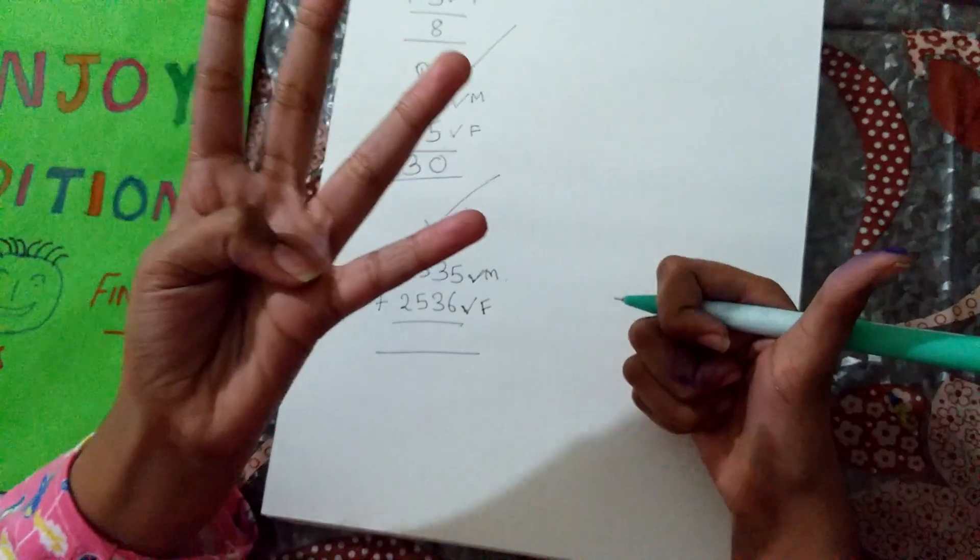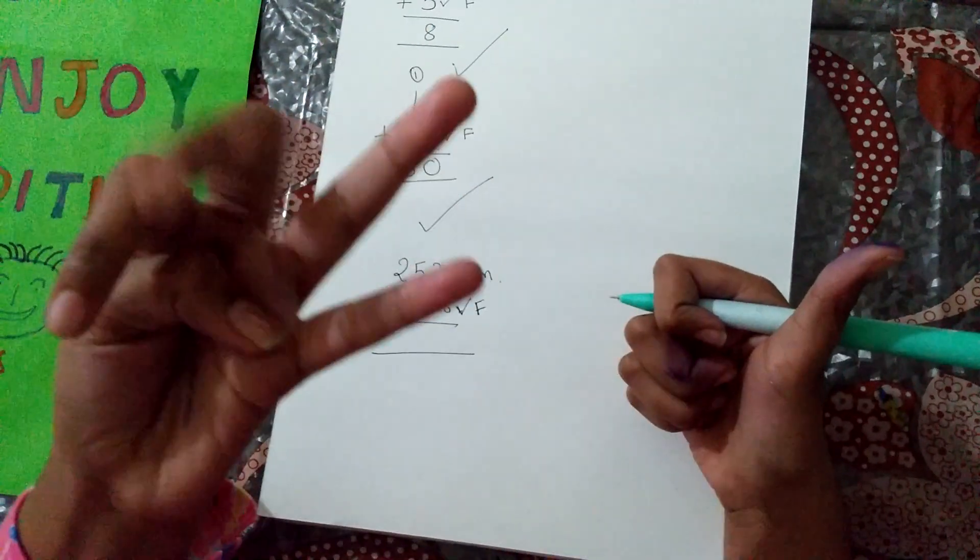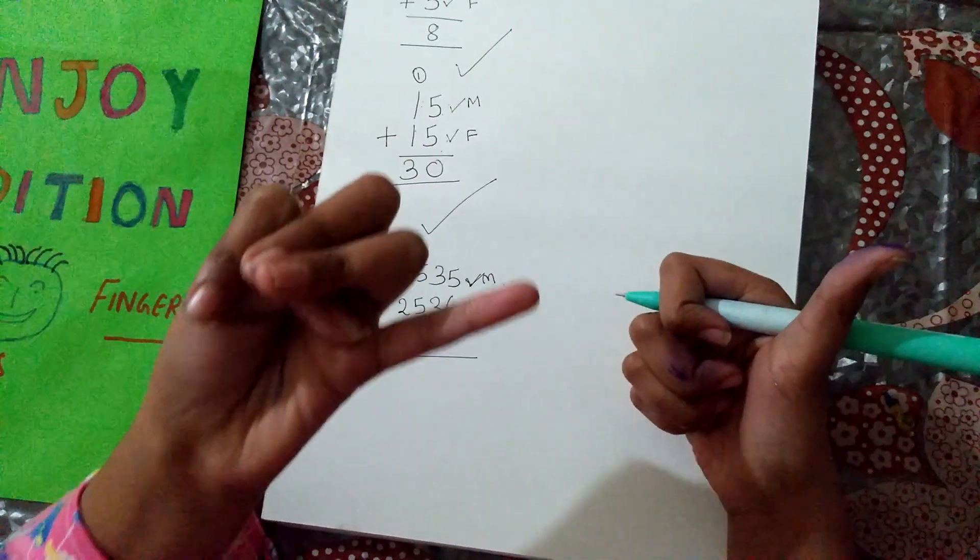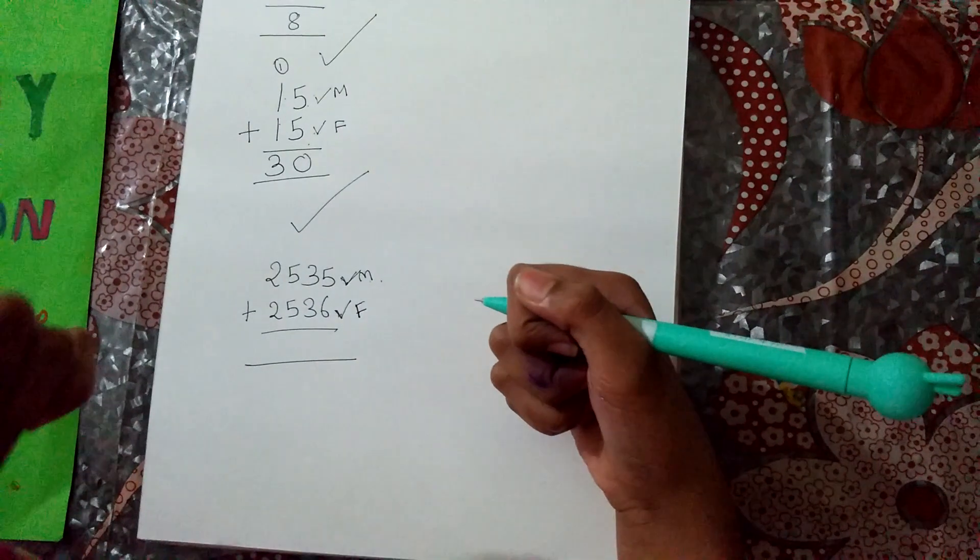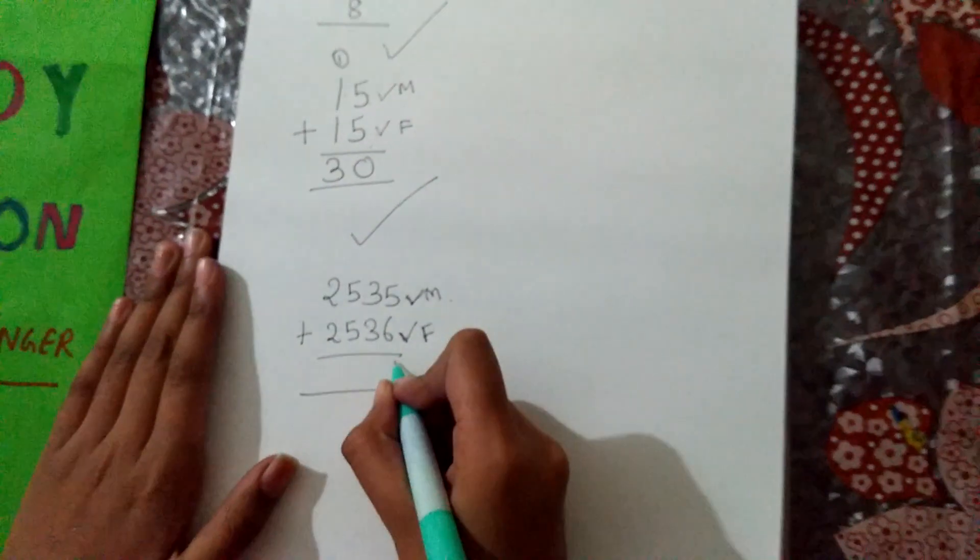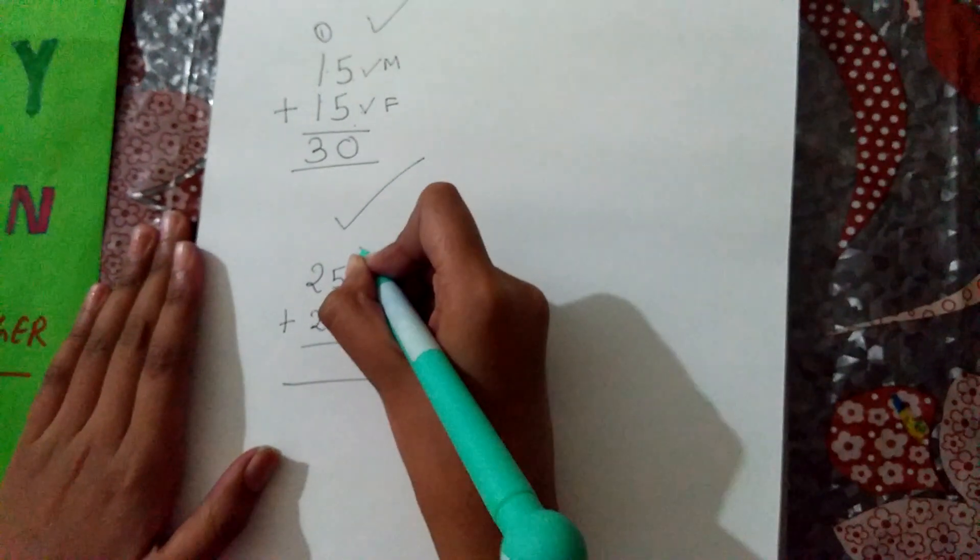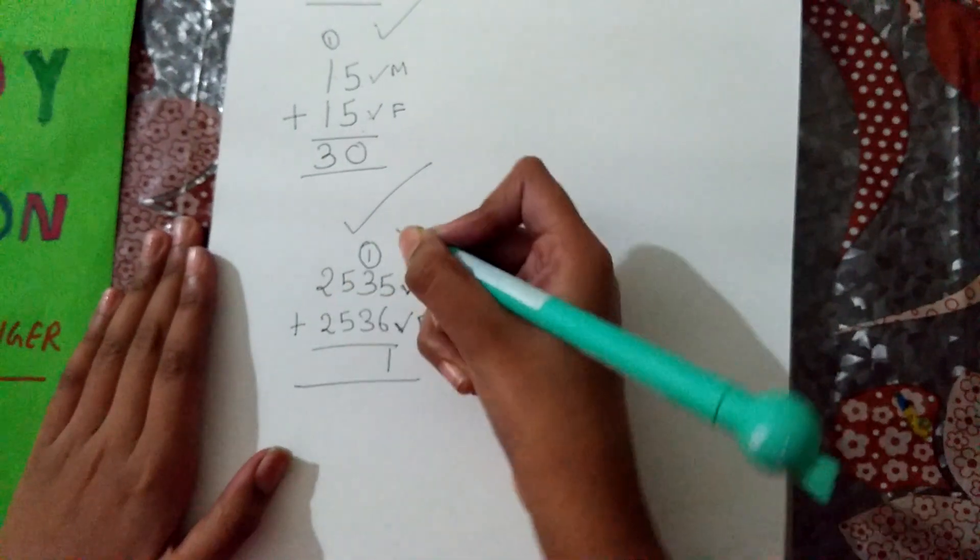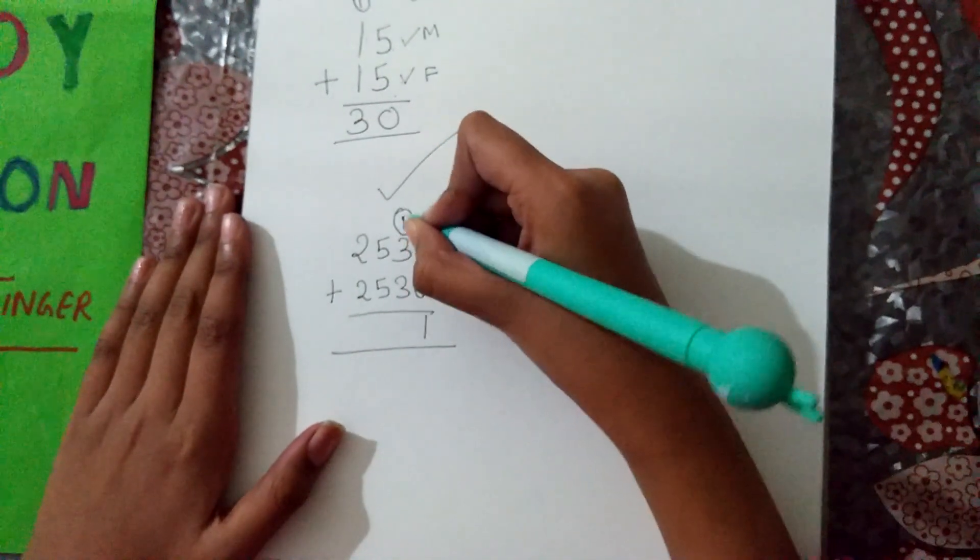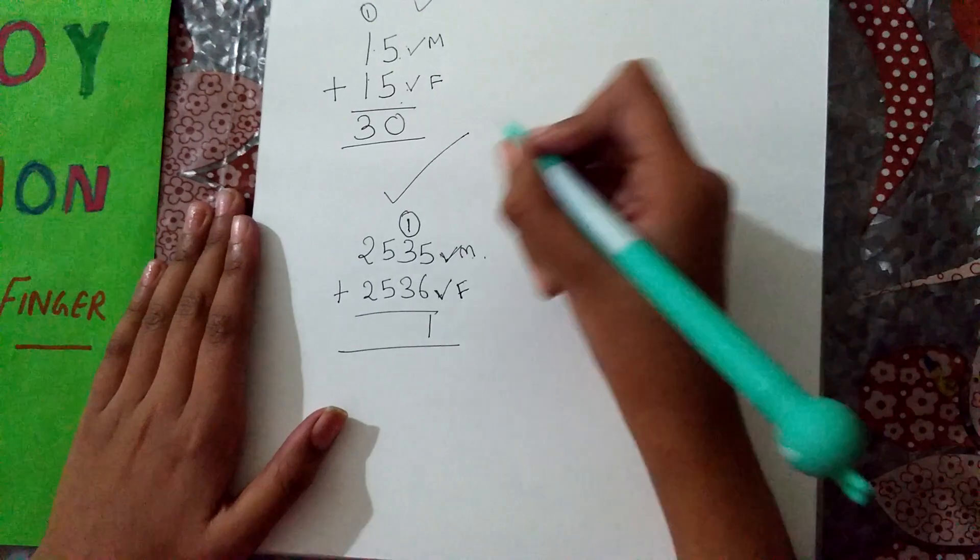After 5, 6, 7, 8, 9, 10, 11. So, take over here 1. Take over here 1 more. I took 1 over here carry forward.